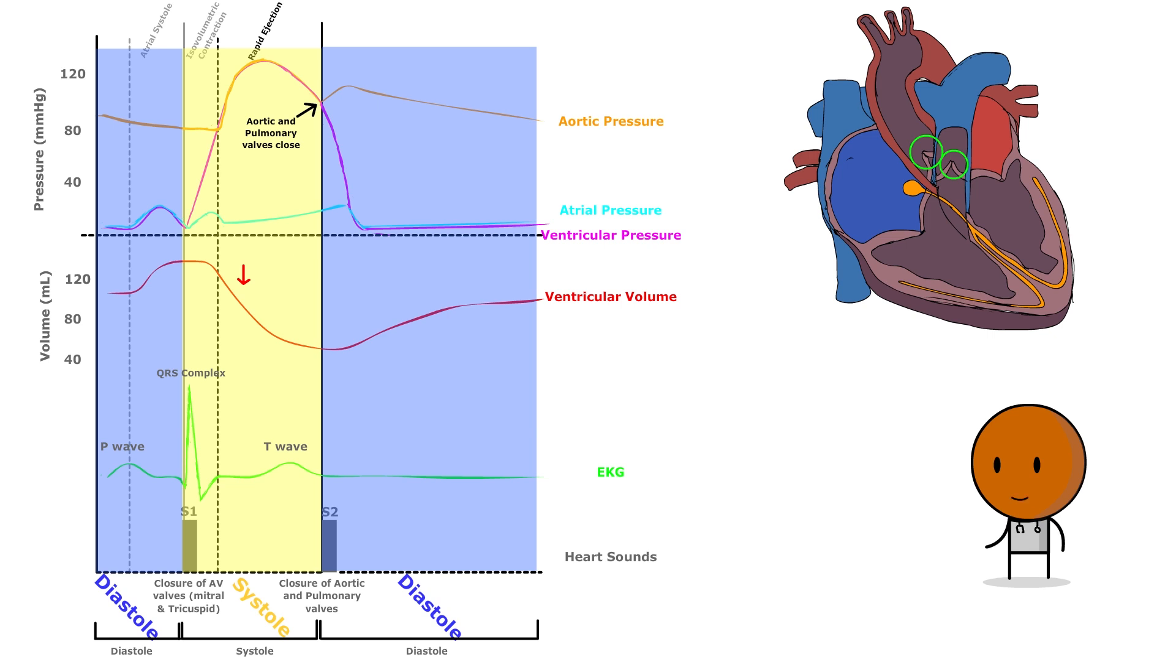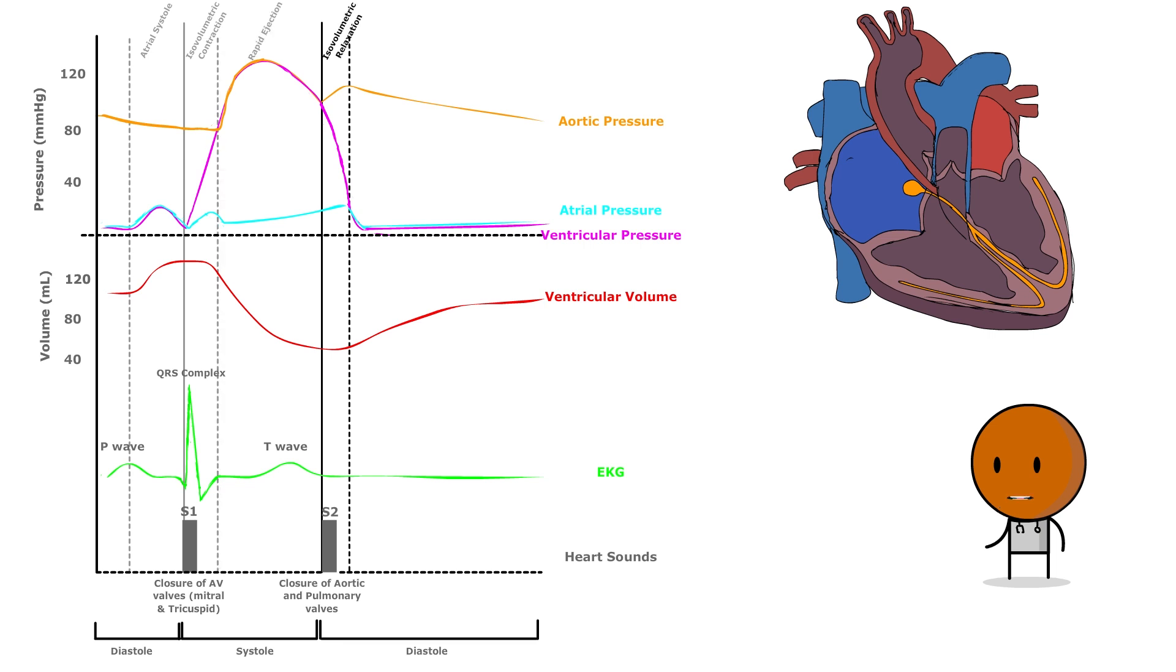That's the closure of aortic and pulmonary valves, S2. The early phase of diastole sees the ventricles relaxing while all valves are sealed, leading to a swift decrease in ventricular pressure without any change in volume.